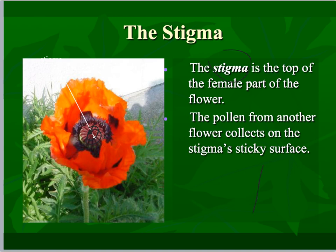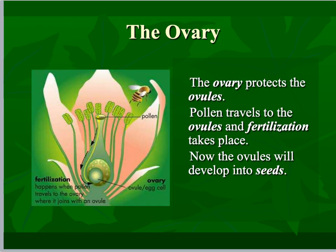The pistil is the female portion. The stigma is located on top. That's where the pollen would land. If a pollen grain for the right species is found at the stigma, we undergo a process called fertilization, where one cell becomes the pollen tube, which creates an avenue for the other sperm cells to travel down and actually participate in the fertilization process.